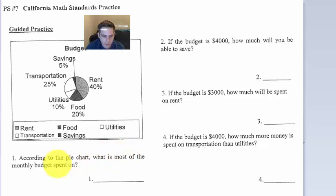Okay, according to the pie chart, what is most of the monthly budget spent on? That should be pretty easy. Rent. I don't think any of you are getting that one wrong.